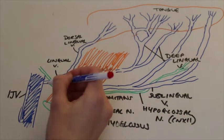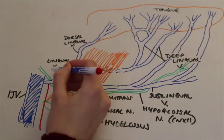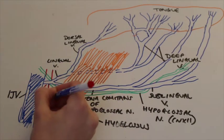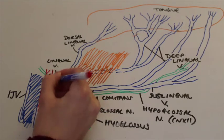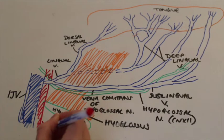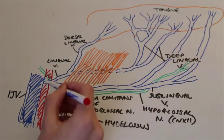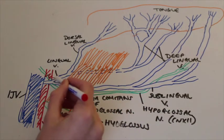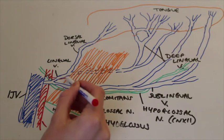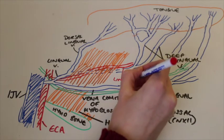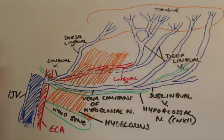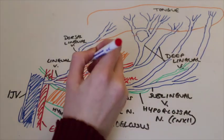So now I'm just going to draw in the arteries so that you can have an idea of how these vessels run together. This is sometimes important to visualize as well. So I've just drawn the external carotid artery and I'm just drawing the lingual artery. So it runs alongside the lingual vein and running alongside your dorsal lingual vein, you've got your dorsal lingual arteries.